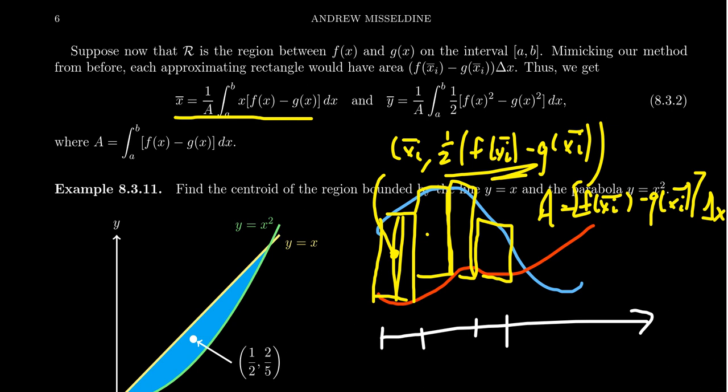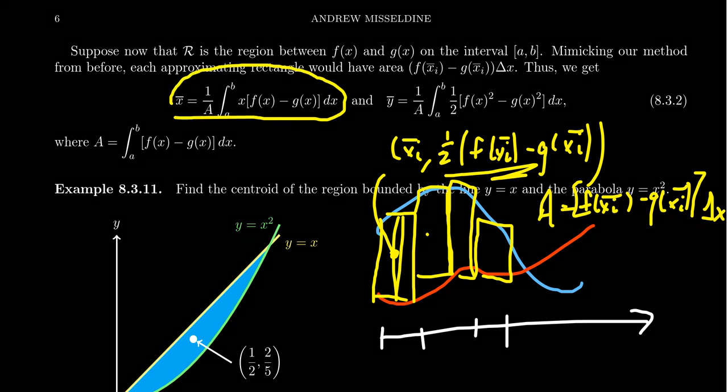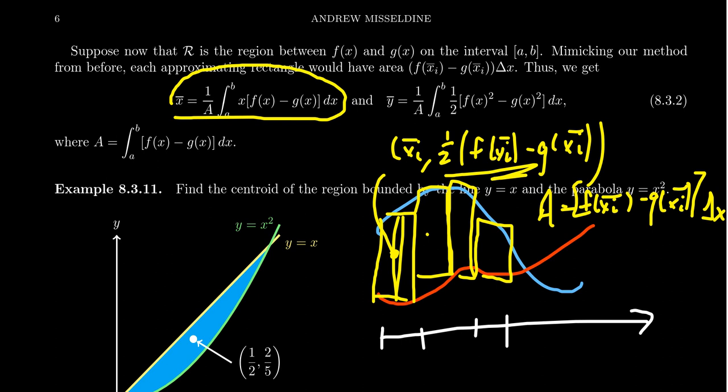So you'll notice that for x-bar, we get one over the area, the integral of x times F of x minus G of x. And this is a consequence of taking, you take the location of x, and this right here was the area, which changed.